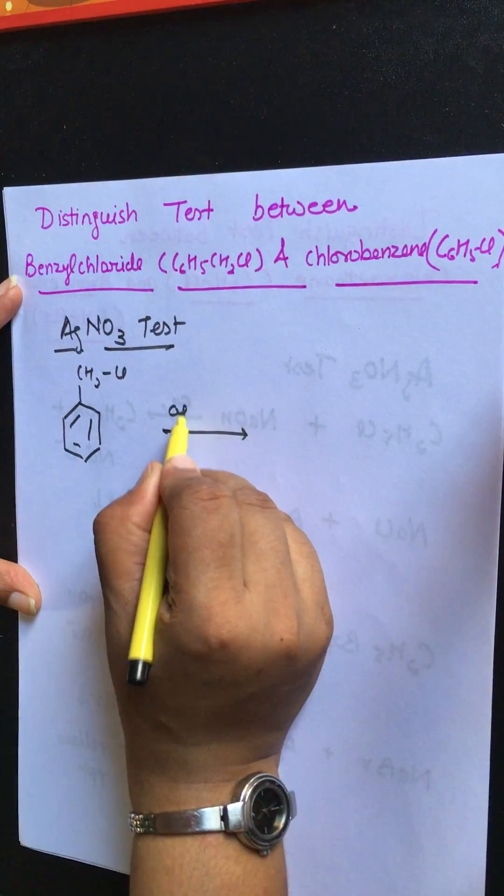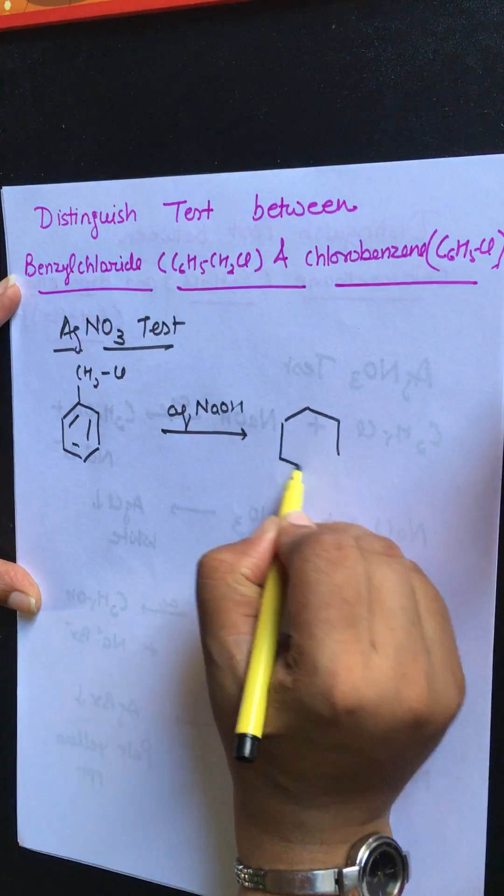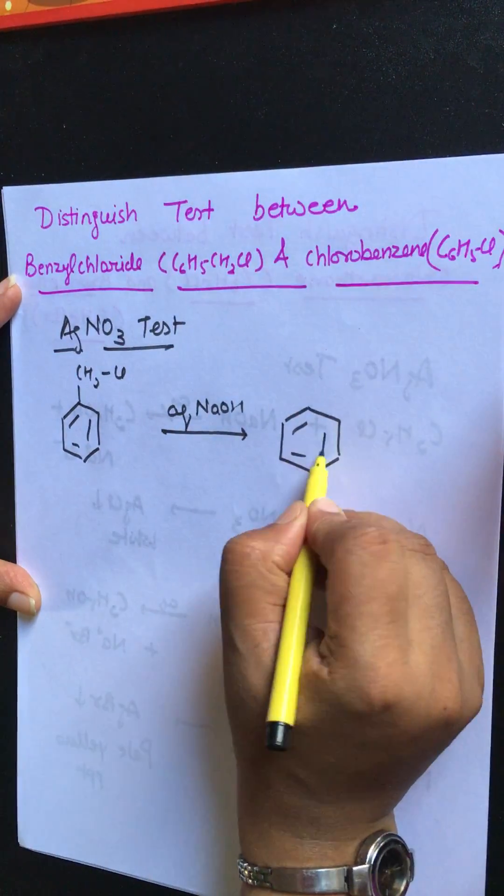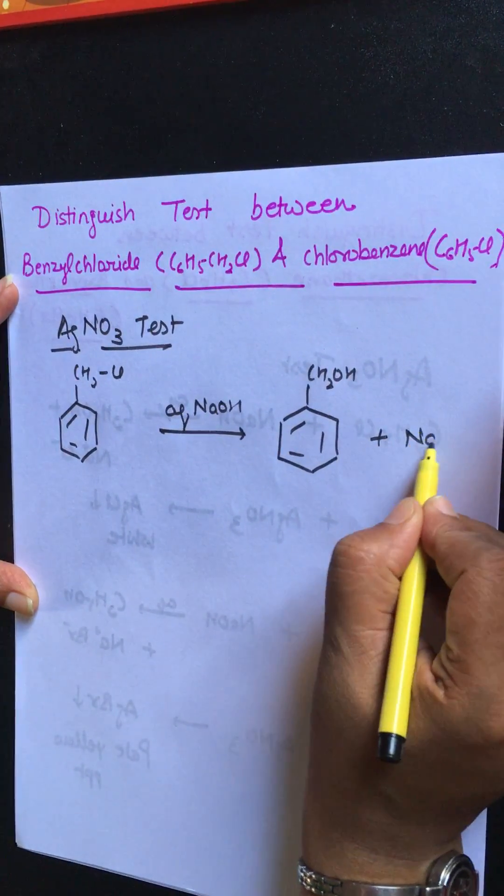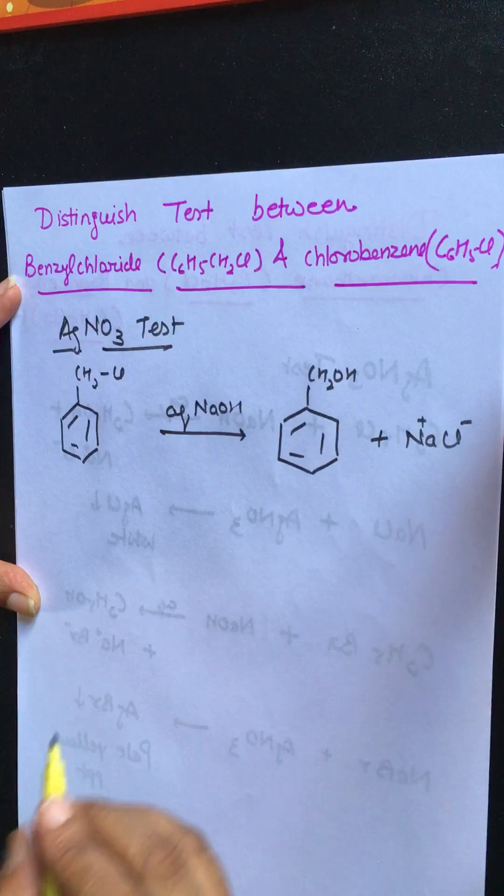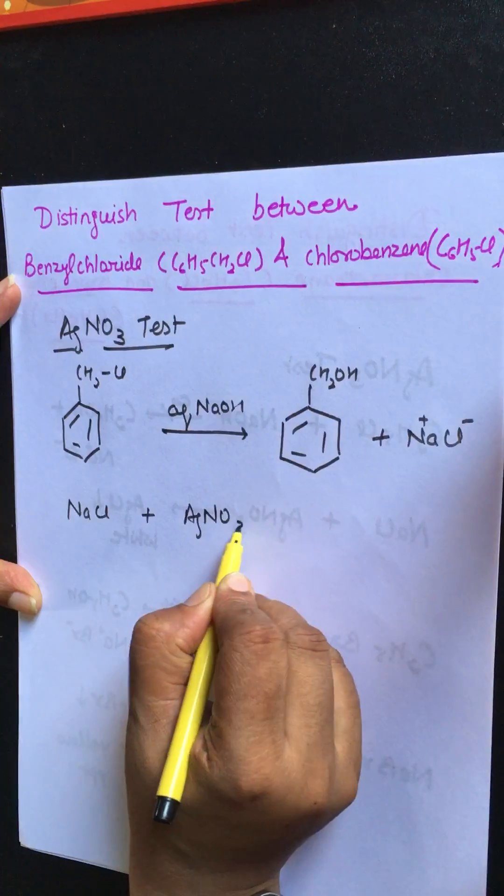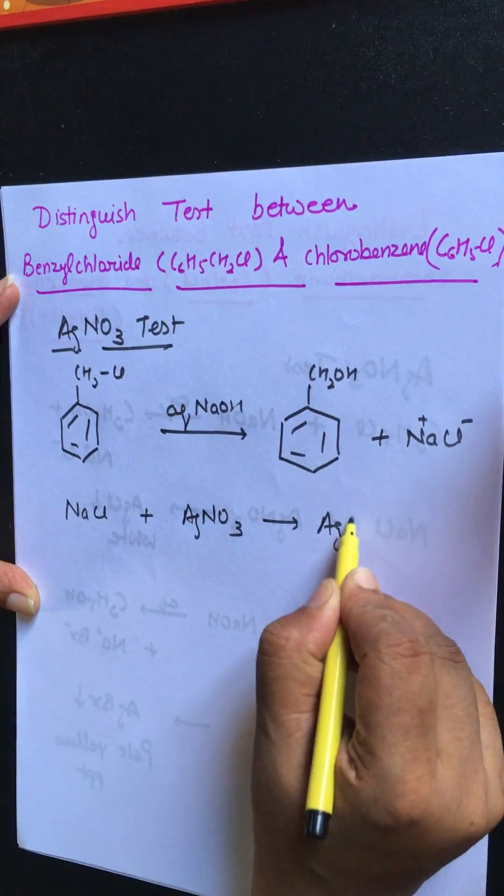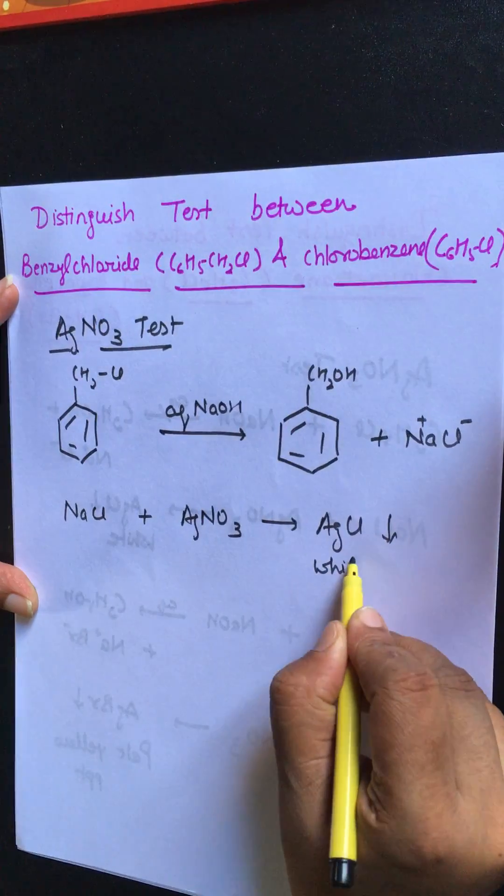Benzyl chloride on treatment with aqueous alkali gives substitution reaction and chloride gets separated out, which on reaction with AgNO3 solution gives white color silver chloride precipitate.